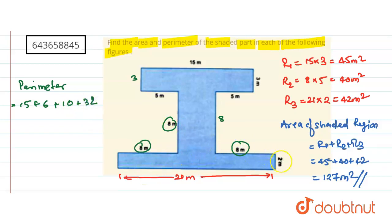And finally, this is 2 and this is also 2. So this is 2 plus 2 is 4. And plus total distance is, this is 21. So this is 21. And if we add all these things, so what I get? So perimeter is nothing but 15 plus 6 is 21 plus 10, 31 plus 32. It is 62, 63 plus 4, 67 plus 21. So this is near about, it is 88 meter. So this is my perimeter of this shaded region.